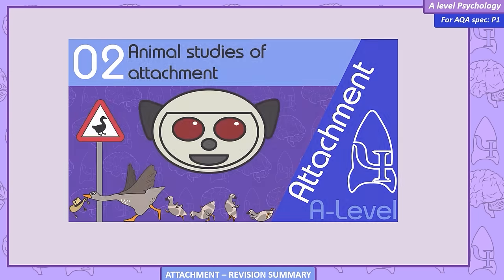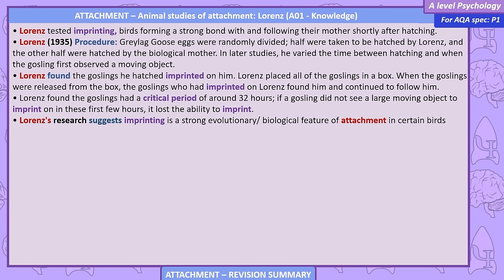Animal studies of attachment. Lorenz tested imprinting — birds forming a strong bond with and following their mother shortly after hatching. Lorenz (1935): grey-lag goose eggs were randomly divided; half hatched by Lorenz, half by the biological mother. The goslings hatched by Lorenz imprinted on him. When all goslings were placed in a box and released, those who had imprinted on Lorenz found and continued to follow him. Lorenz found the goslings had a critical period of around 32 hours — if a gosling did not see a large moving object in that time, it lost the ability to imprint.